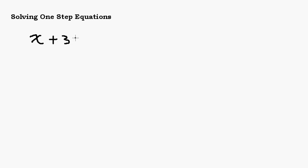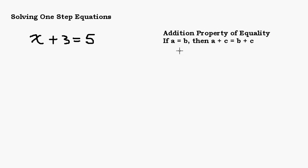Let's get started finding the solutions to equations. An important property you need to know is called the Addition Property of Equality. It says: if a equals b, then a plus c equals b plus c. A and b represent the two sides of the equation, and c is being added to both sides. So if two things are equal, you can add the same thing to both sides and they'll still be equal.